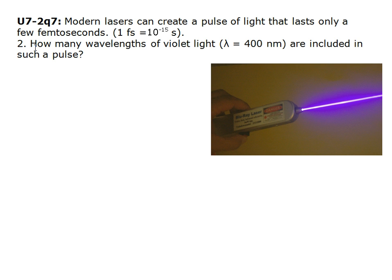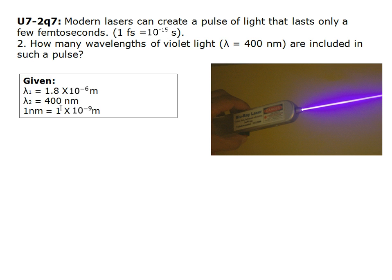Question 2: How many wavelengths of violet light, lambda equals 400 nm, are included in such a pulse? Given: lambda 1 equals 1.8 times 10 to the negative 6 meters, lambda 2 equals 400 nm, and 1 nm equals 1 times 10 to the negative 9 meters.